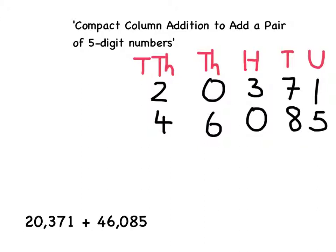And because I'm adding these two numbers together I must remember to put in my add symbol. Finally I'm going to use a ruler to draw in a horizontal line to separate my columns from my working out.